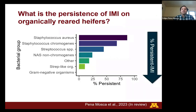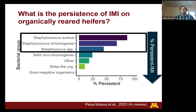To show more data supporting this, we enrolled around 500 organic dairy heifers in first lactation and sampled them repeatedly in the first five weeks after calving. On the y-axis are the different bacterial groups, and on the x-axis the proportion of infections classified as persistent, meaning found repeatedly in many samples from a given animal. Staphylococcus aureus, Staphylococcus chromogenes, and Staphylococcus species showed high persistence in the mammary gland. For Staphylococcus chromogenes, 87% of infections were classified as persistent. For Staphylococcus aureus this was 70%, and for Strep species it was 44%.